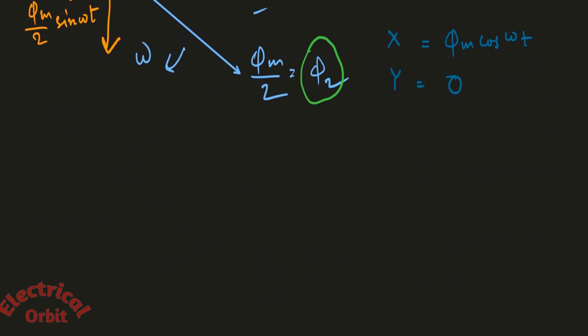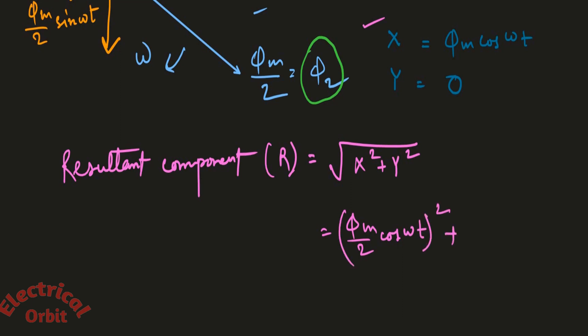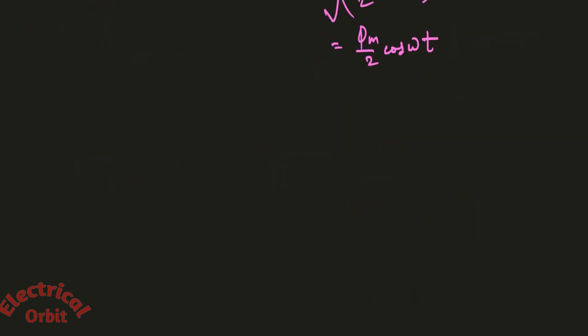Now if we try to derive the resultant component, suppose this is R which will be equal to √(X² + Y²). What is the X value we are getting? Φ_M/2 cos(ωt) whole square plus 0 square, so that is equal to Φ_M/2 cos(ωt). So what is the inference we are drawing from here?